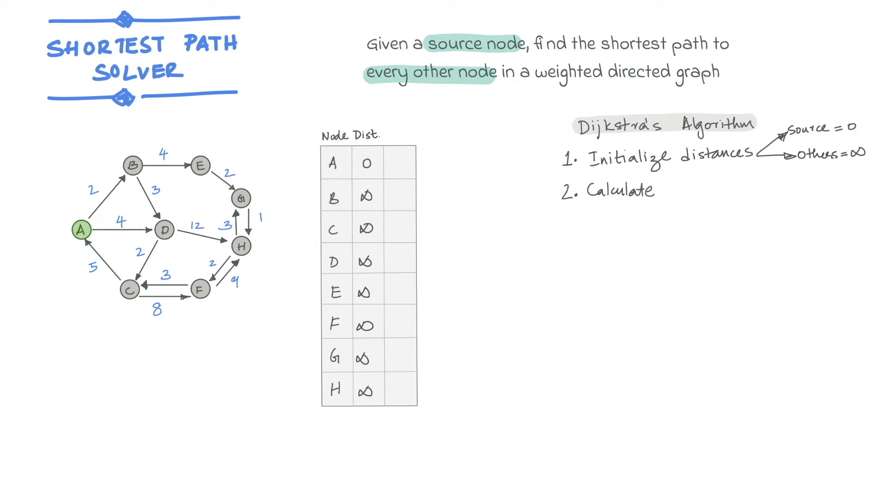The second step is to calculate the distance from the starting node to the unvisited neighbors of the current node. In the first iteration, the starting node is the same as the current node. So in our case, this is A and its neighbors are all the nodes that we can get to directly from A.